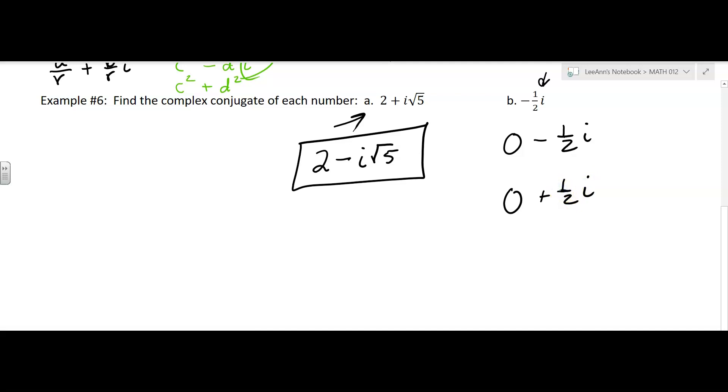So the complex conjugate would be 0 plus 1 half i. They probably aren't going to write the 0. They're probably just going to write 1 half i. That would be the complex conjugate. So it's the imaginary part that you're taking the opposite of.